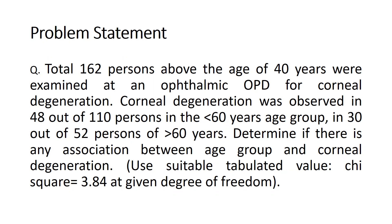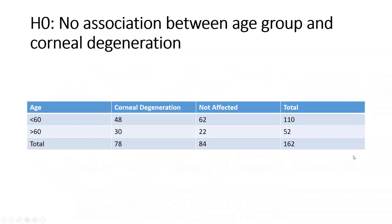We need to determine if there is any association between age group and corneal degeneration. First, we state the null hypothesis: there is no association between age group and corneal degeneration. The alternate hypothesis states there is a significant association. Through this test we will find out which hypothesis is accepted.